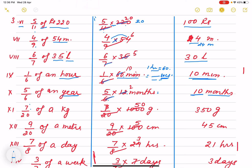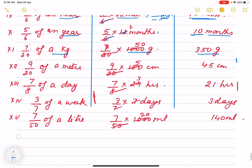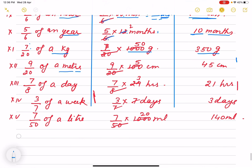Same way, 7 by 20 of a kilogram. So 1 kilogram we change into 1000 gram so that we cancel and it is 350 gram is answer. 9 by 20 of a meter. Meter we change into 100 centimeter. Maybe we change into millimeter also, so then it will be 1000 millimeter. But here I have changed into centimeter. Both answer will be correct if you are writing into 1000 but it will be millimeter. And then your answer will be also in millimeter.